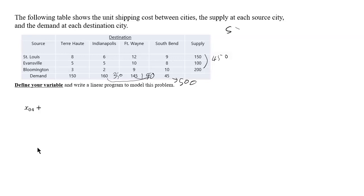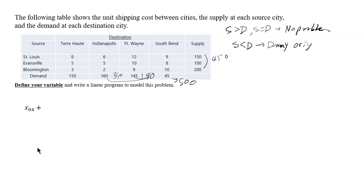If the supply is bigger than demand, or supply equals demand, nothing needs to be done. However, if the supply is less than demand, then you need to have a dummy factory, a dummy origin, so that all the demand could be met.